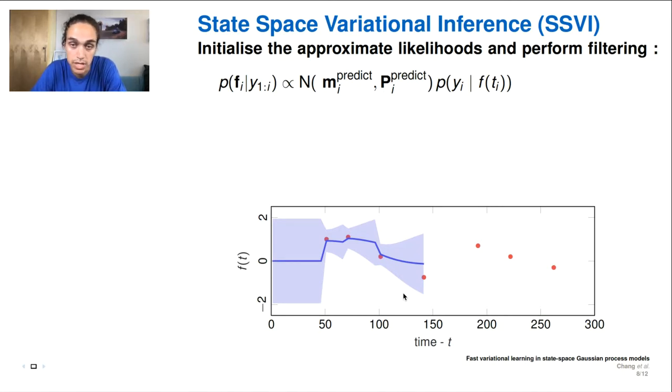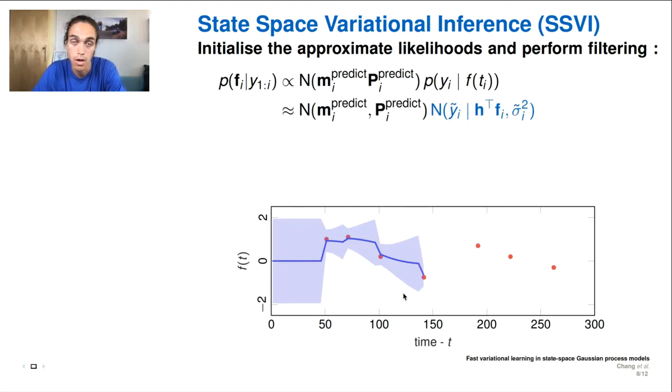So we're passing through the data. And at every step, we make a prediction from the previous state, and we want to update it with the observation model or the likelihood. And here the exact likelihood is non-Gaussian. But if we use the CVI formulation and initialize our lambda tildas and the pseudo observations, we can replace the non-Gaussian likelihood with a Gaussian likelihood. And then now we have a Gaussian likelihood, we can still perform the Kalman filter update step.